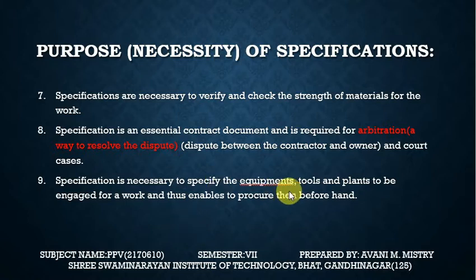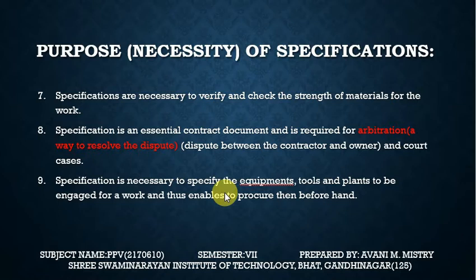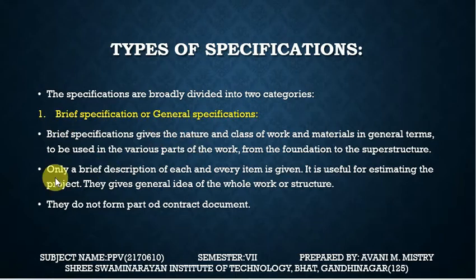Specification is necessary to specify the equipment, tools, and plants to be engaged for the work, and it enables us to procure them beforehand. From the specification, we can determine what equipment, tools, and plants are needed for the work. Then, types of specification: specifications are broadly divided into two categories — brief specification (or general specification) and detailed specification.